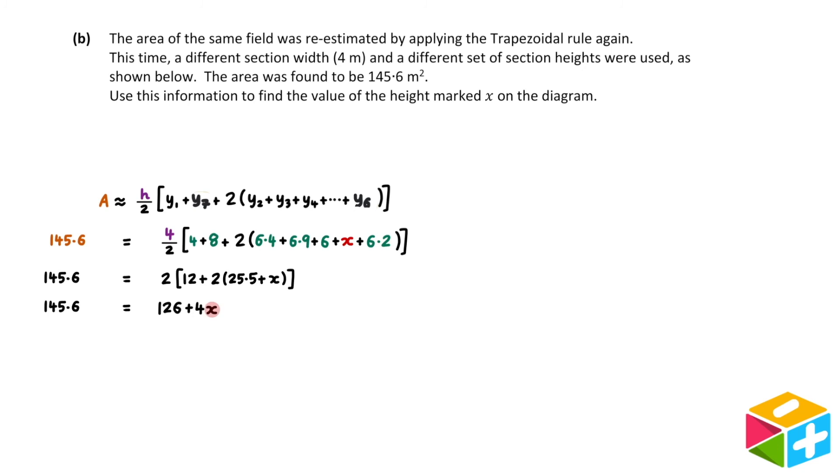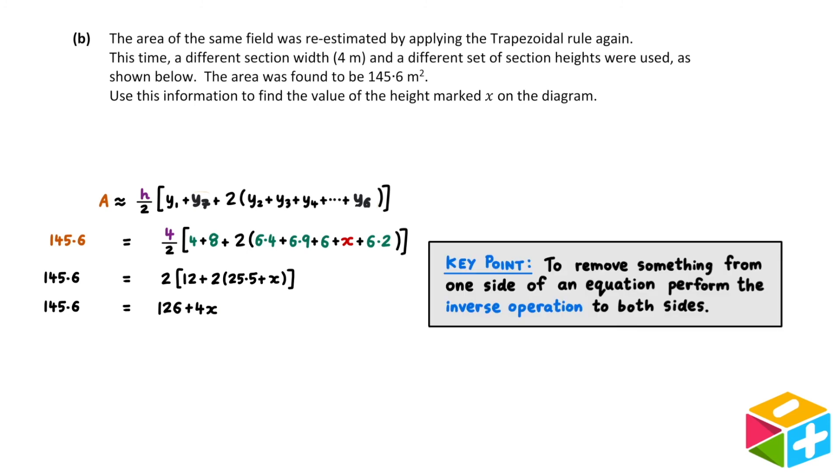Now that we've cleaned up the right-hand side, it makes it a lot easier to solve for x. To do this, we need to isolate the x term by removing everything else from the right-hand side of the equation. The key point here is the following: to remove something from one side of the equation, we must perform the inverse operation to both sides.